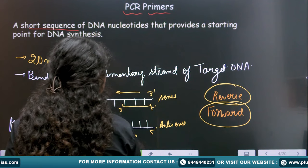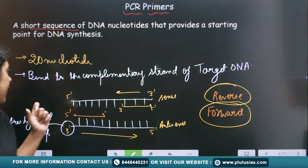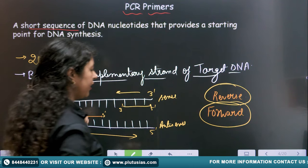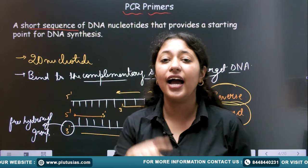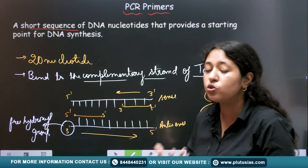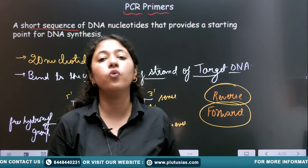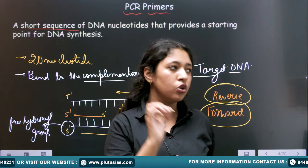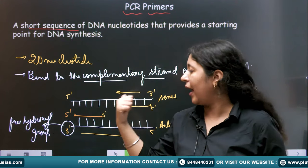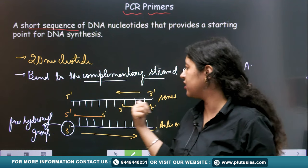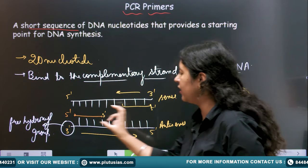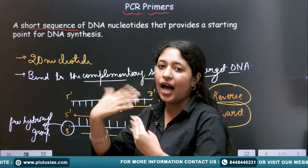One important thing to infer is that the primer binds to the complementary strand of target DNA. This means we must know prior knowledge of the sequence of the DNA target strand. If we don't know the sequence of the target strand, the primers cannot be designed to go and attach. So we can design primers to go and attach to the sequence we wish to amplify.